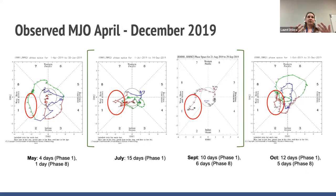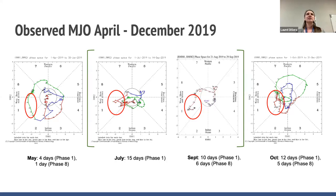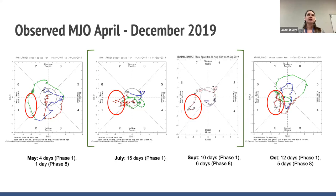I looked at the Wheeler-Hendon diagrams. The big triangles at the top, bottom, and both sides represent different locations: the Western Pacific, the Maritime Continent, the Indian Ocean, and the Western Hemisphere and Africa. As the MJO moves around the world, it moves around these circles. If it's inside the small circle in the middle, it means it's inactive; once it leaves, it becomes active. The farther away from the center, the more strength it has — you'll see larger convective storms and such.